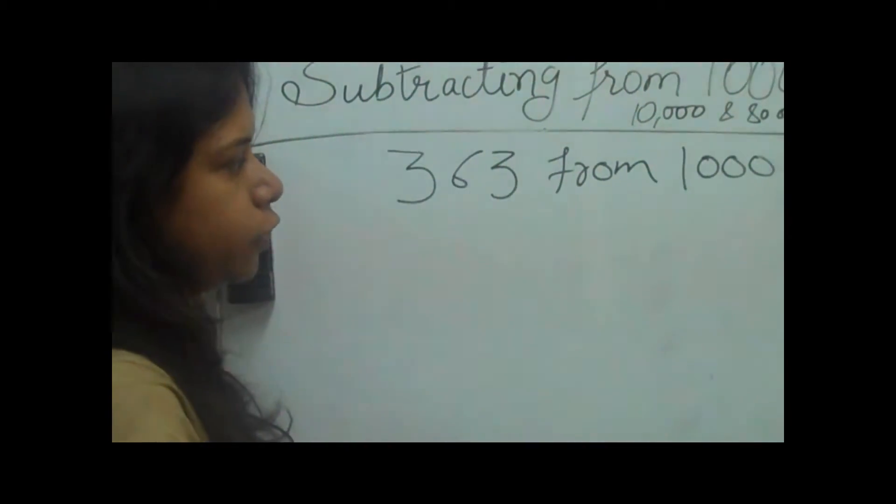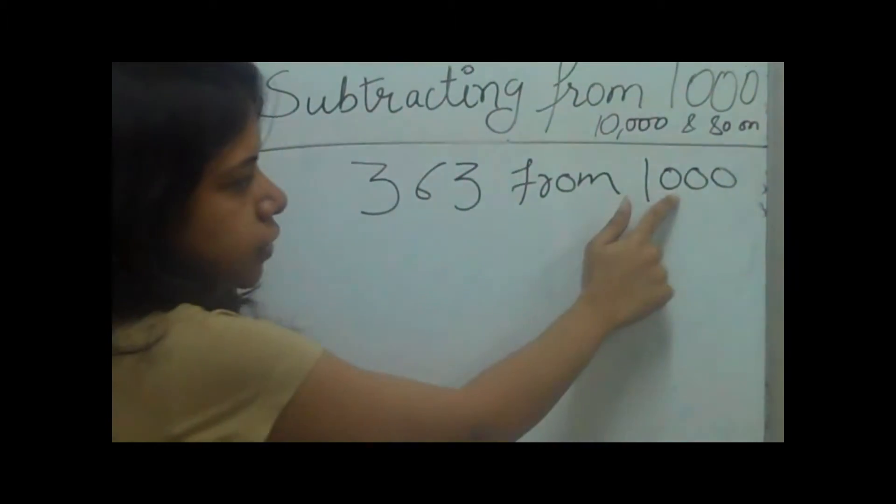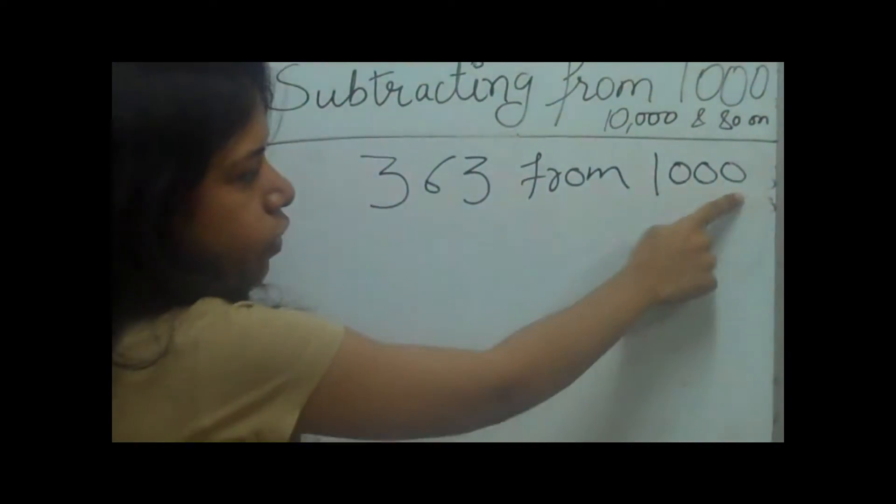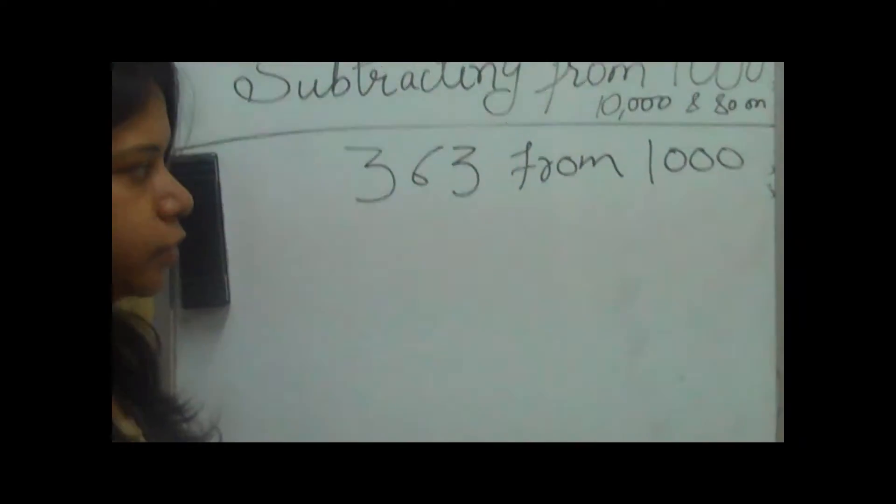What we need to do is first check that there should be the same number of digits as there are zeros. So as there are 3 zeros and we have 3 digits, this makes it okay.